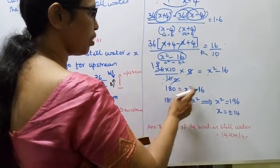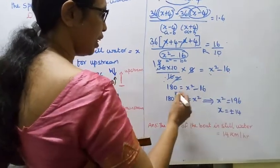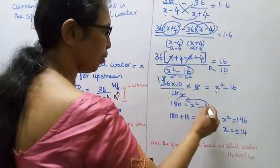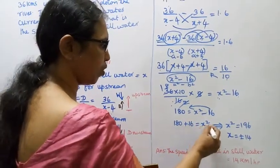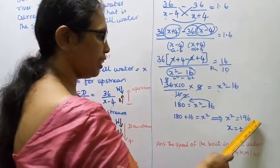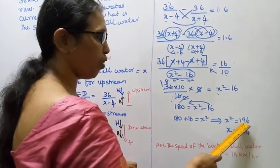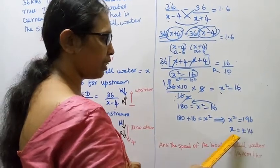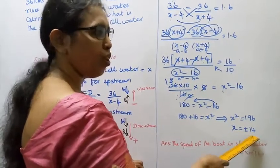Minus 16 goes to the right side. 180 plus 16 equals x squared. X squared equals 196. Square root of 196 gives x equals plus or minus 14.